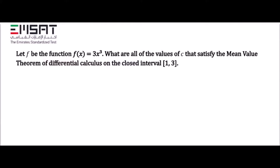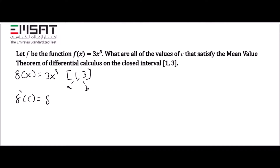Let f be the function f(x) = 3x to the power of 3. Find all values of c that satisfy the Mean Value Theorem on the closed interval [1, 3]. We write the function f(x) = 3x³, with a = 1 and b = 3. The Mean Value Theorem equation is: f prime of c equals f(b) minus f(a) over b minus a.